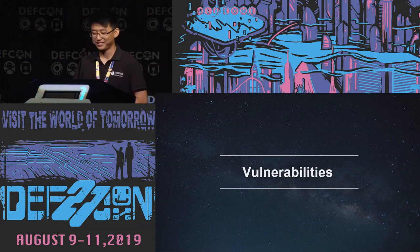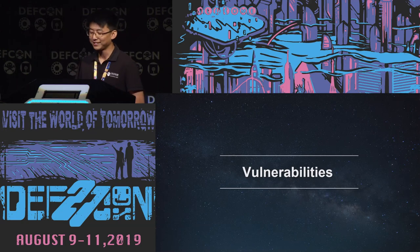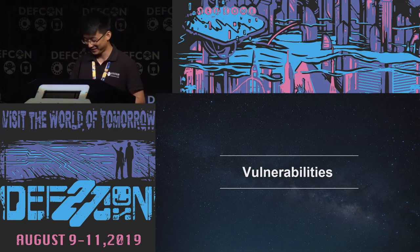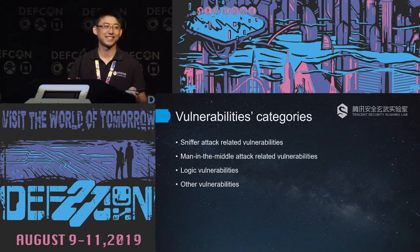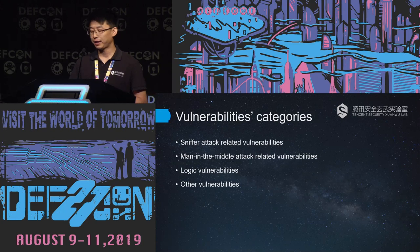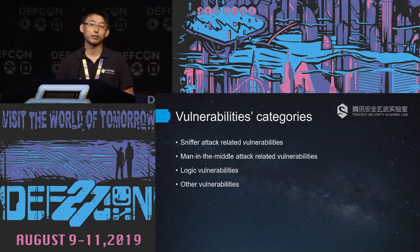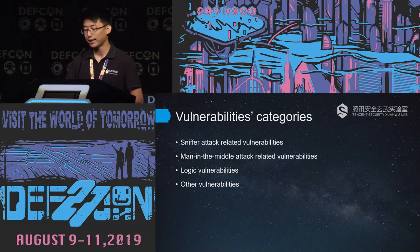Now let's show you some of the real vulnerabilities. Note that in this talk, we won't focus on specific apps or vendors — I will cover all the vendor and app names here for security reasons. Also, some of the vulnerabilities are not yet fixed, so I will also cover the critical code. We will present four vulnerability categories: sniffer attack related vulnerabilities, man-in-the-middle attack related vulnerabilities, logic vulnerabilities, and other vulnerabilities.